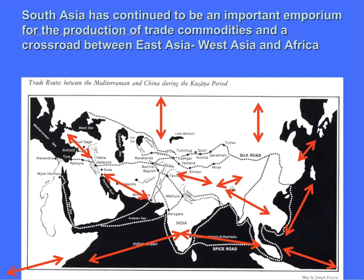In conclusion, South Asia has been an important region for the development of cotton and has continued to be an important emporium for the production of trade commodities, a crossroads between East Asia, West Asia, and Africa. This exhibition and its catalog follow the later history, and I hope that this earlier history helps to fill in some of the gaps in our knowledge. Thank you very much.